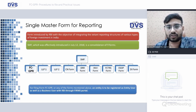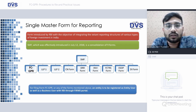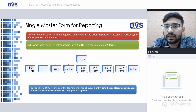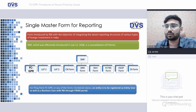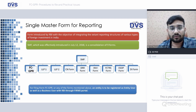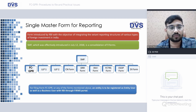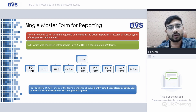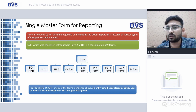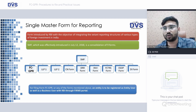The Single Master Form was introduced by RBI with the objective of integrating the reporting structures of various types of foreign investment in India. Effectively introduced in 2018, SMF is a consolidation of nine forms, among which one is FC-GPR. The nine forms are: FC-GPR, LLP-I, LLP-II, CN Form, DRR Form, InVI Form, FCTRS, ESOP Form, and DI Form. Our focus today is on FC-GPR.